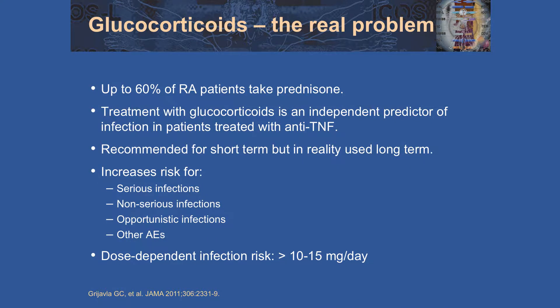This point was nicely made by Dr. Looney this morning, and I want to reemphasize it because it's so important: although I'm talking about preventing infections in the setting of biologics, don't forget about glucocorticoids and the impact they have on risk of infection. The majority of patients with RA are on prednisone. While they're recommended for short-term use, in reality patients are on them longer-term. They are an independent predictor of infection in patients on TNF inhibitors — both serious and non-serious infections and opportunistic infections — not to mention the other adverse events associated with steroids.